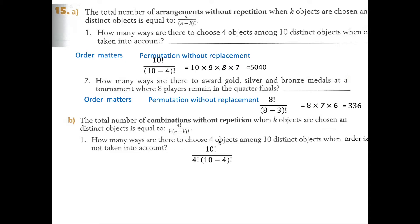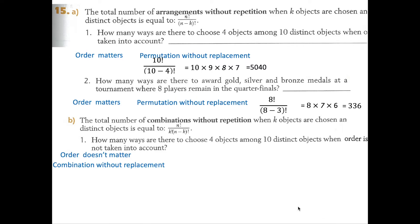One. How many ways are there to choose 4 objects among 10? So order doesn't matter. This is a combination without replacement. We're going to do 10 factorial over 4 factorial over 10 minus 4, which is 6 factorial. So we have 10 factorial divided by 4 factorial, also divided by 10 minus 4 factorial.